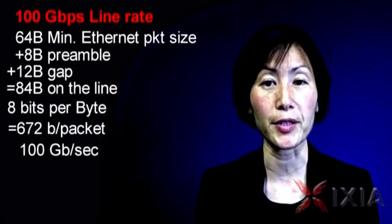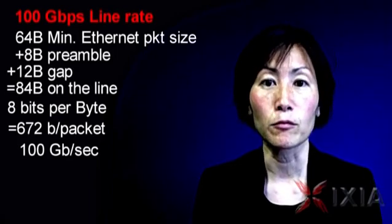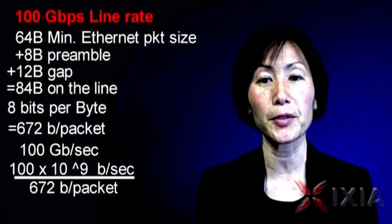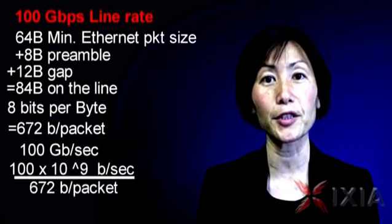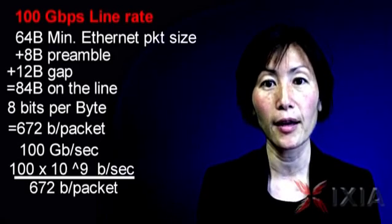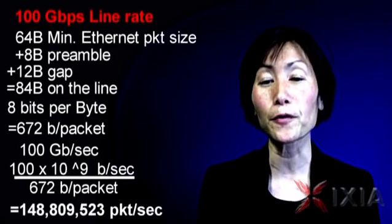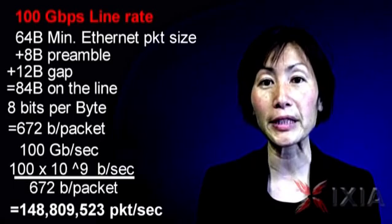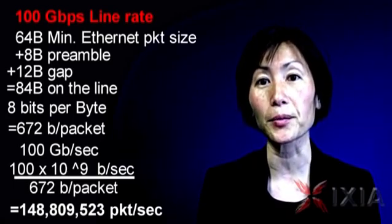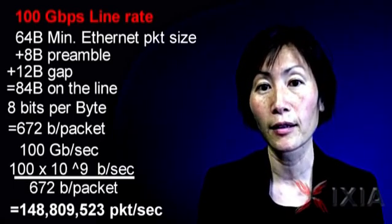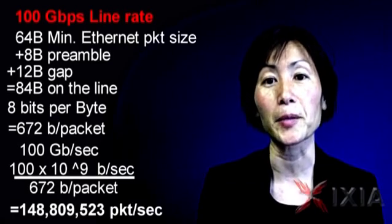At 100 gigabit per second, that's 100 times 10 to the 9 bits per second divided by the 672 bits per packet that we had, which gives us 148,809,523 packets per second. That's 100 gigabit per second.